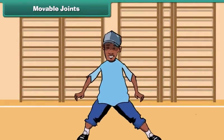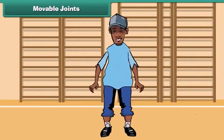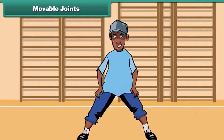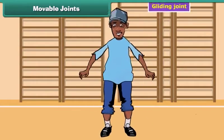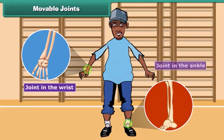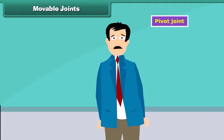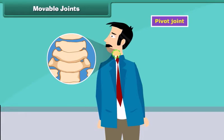Friends, have you ever noticed that we can move our hands and our feet in different ways? The joints which allow such movements are called gliding joints. Joints in the wrist and the ankle are examples of these joints. Pivot joint — our neck allows us to turn our head on both sides. This is possible because of the pivot joint.